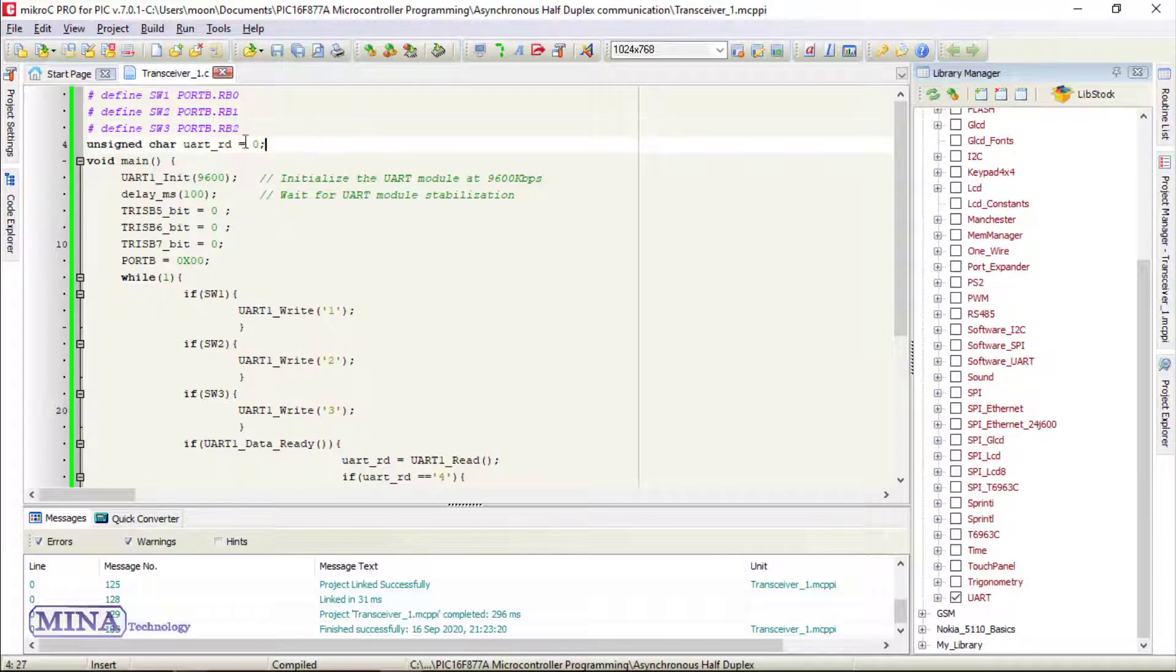We have defined an unsigned character variable whose name is UART_RD. In main section, we have initialized the UART module at 9600 kbps. The 100ms delay stabilizes the UART module.